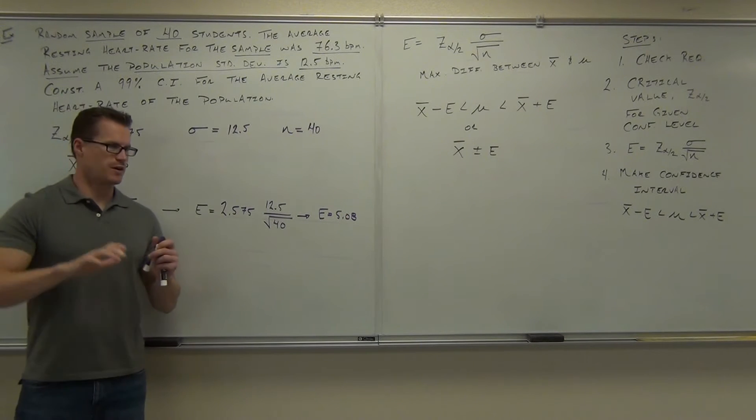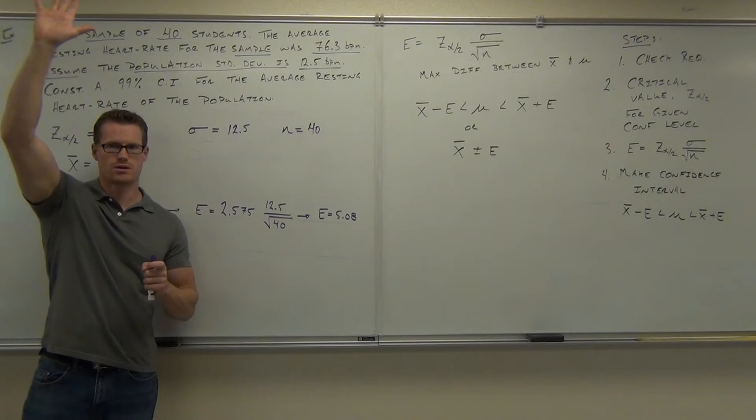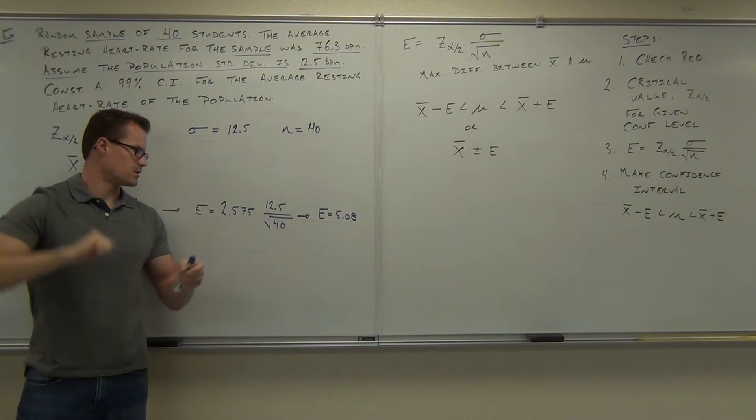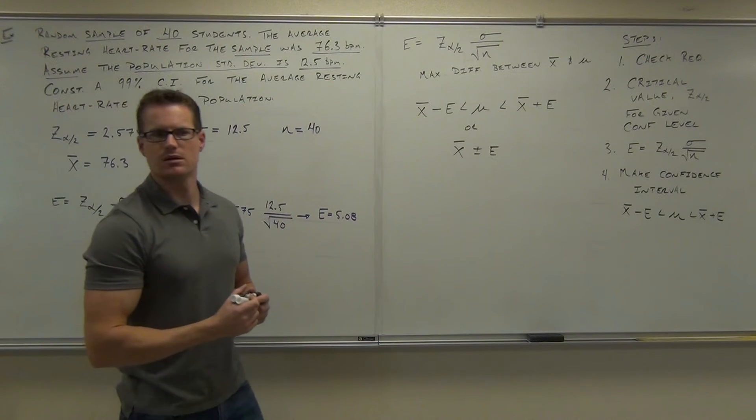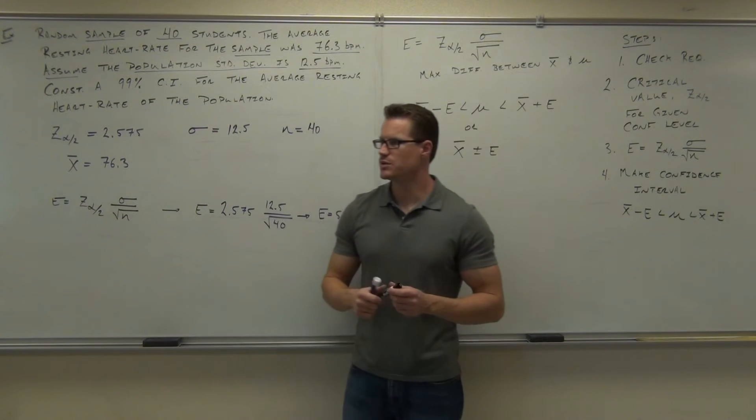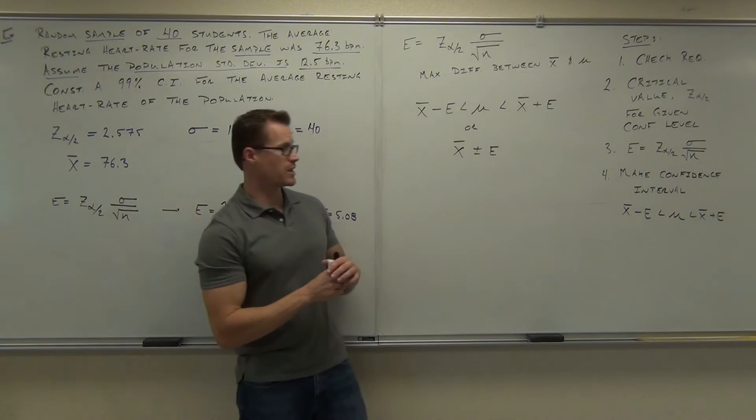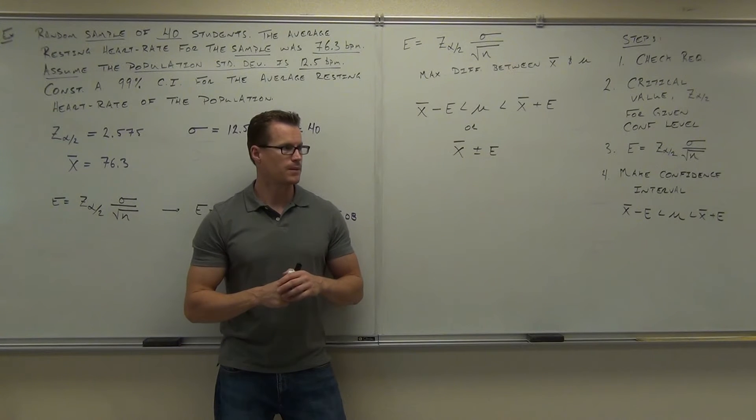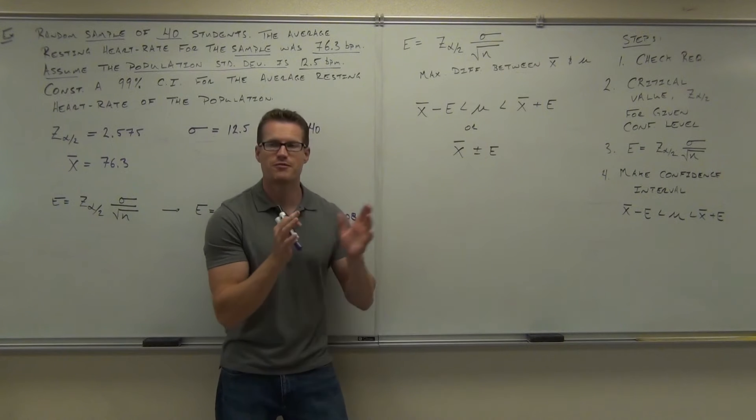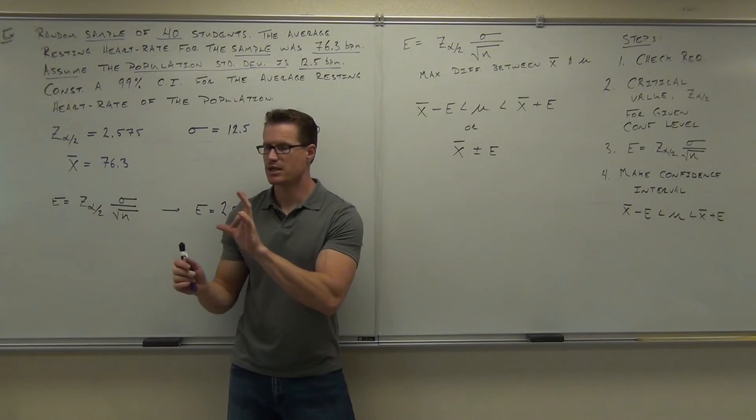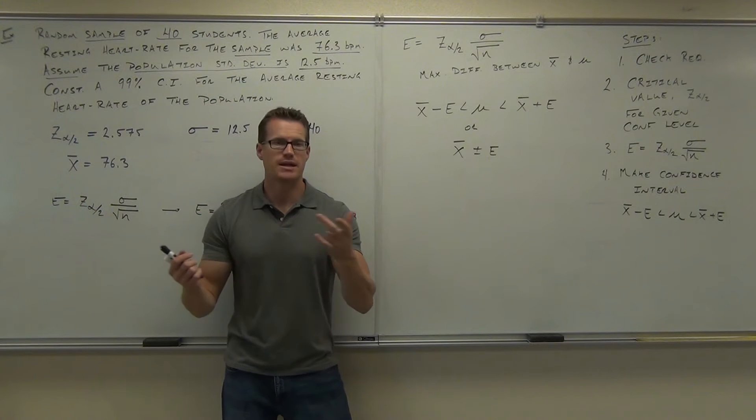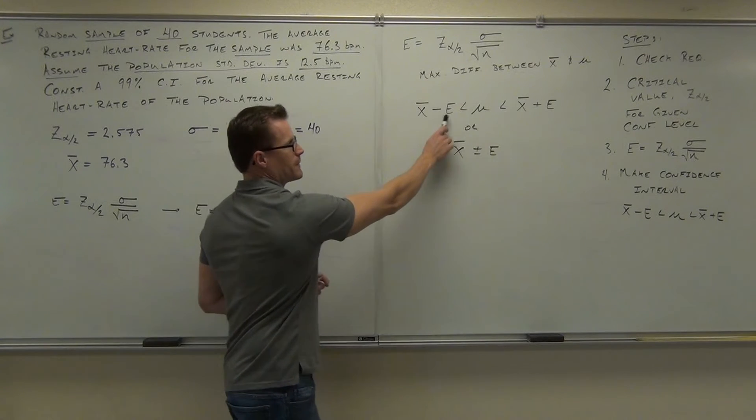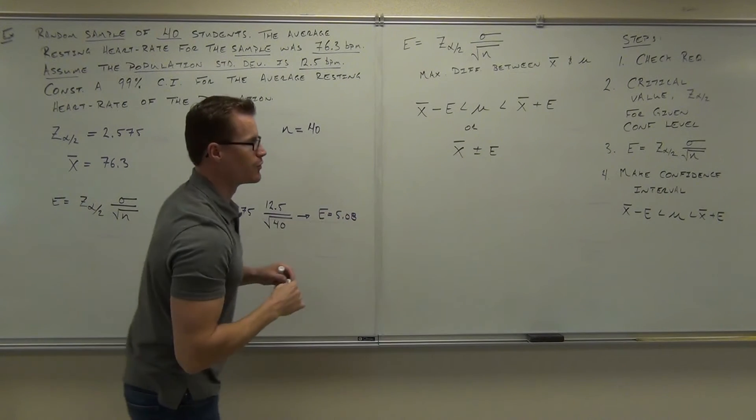Okay, I need a show of hands if everyone's okay on getting that far. Raise your hand if you are. What do you do with that 5.08? This should be very similar to what you do with your proportions, right? You took your p hat, you added E, and you subtracted E. Now we're not dealing with p hat, but we are dealing with x bar. You're going to take x bar, you're going to subtract E, and you're going to add E.